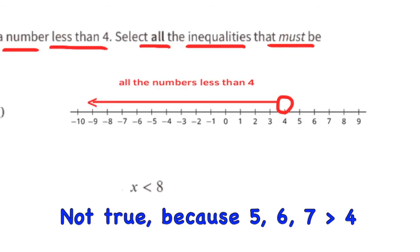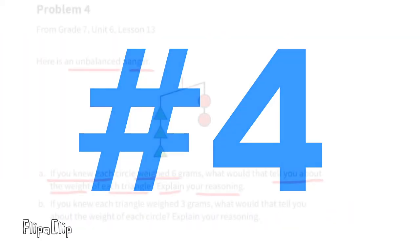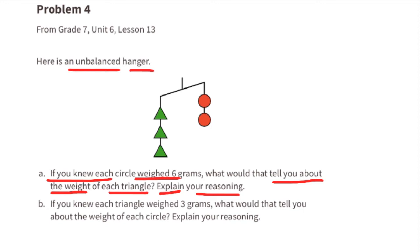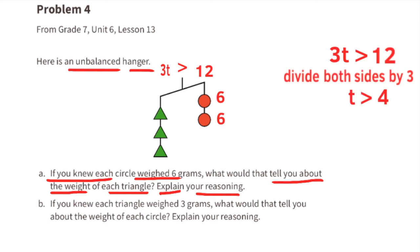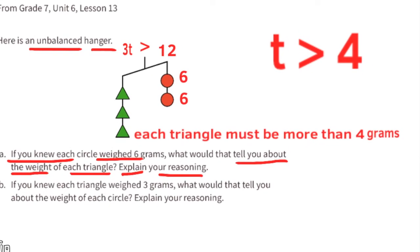Problem number four, from 7th grade Unit 6 Lesson 13: Here is an unbalanced hanger. Part a: If each circle weighed 6 grams, what would that tell you about the weight of each triangle? I can tell by looking at the hanger that the left side is heavier than the right side, meaning 3 triangles is greater than 2 circles. We write this as 3t is greater than 12 — since 6 times 2 equals 12. Divide both sides by 3: t is greater than 4. Each triangle must have a value greater than four.